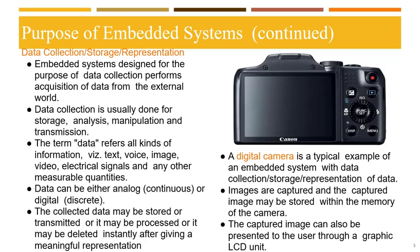Embedded systems with analog data capturing techniques collect data directly in the form of analog signals. Whereas embedded systems with digital collection mechanisms convert the analog signal to the corresponding digital signal using analog-to-digital converters and then collect the binary equivalent of analog data. If the data is digital, it can be directly captured without any additional interface. The collected data may be stored, transmitted, processed, or deleted instantly after giving a meaningful representation. A digital camera is a typical example of an embedded system with data collection, storage, and representation.